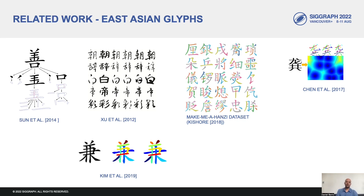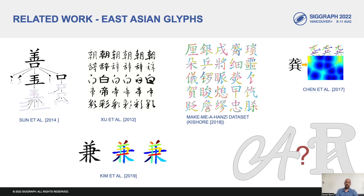Automatic stroke decomposition is more common with East Asian characters, which have a very well-defined stroke structure with extensive datasets for data-driven methods. However, these methods do not work well with western fonts, which do not have ground truth data, and often blend components in ways that make segmentation more challenging.